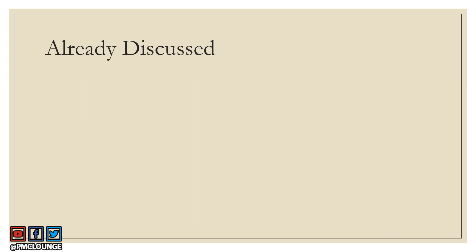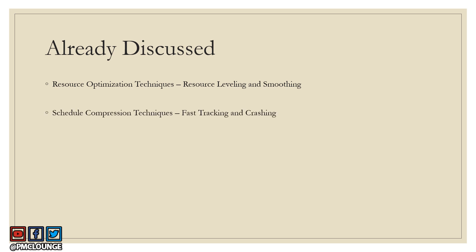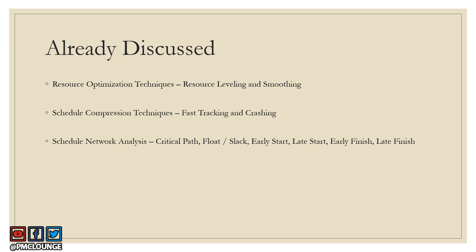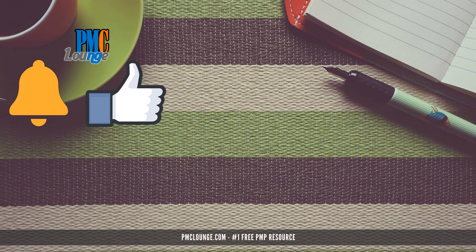Some other tools and techniques have already been discussed in previous videos: resource optimization techniques including resource leveling and smoothing; schedule compression techniques including fast tracking and crashing; and schedule network analysis covering critical path, float, slack, early start, late start, early finish, and late finish. The second link in the description takes you to the full schedule management playlist, and the third link covers everything about CPM.